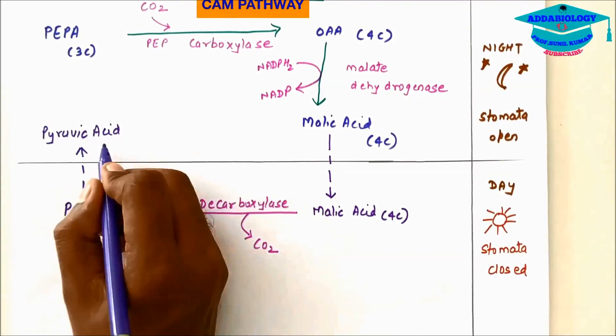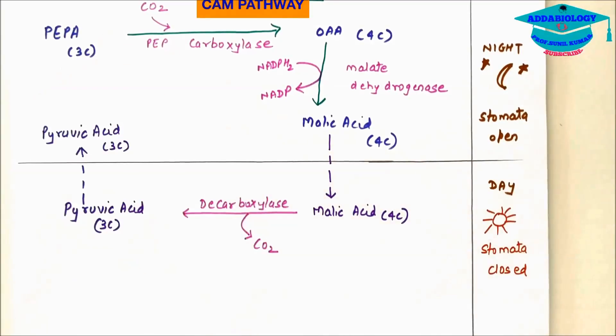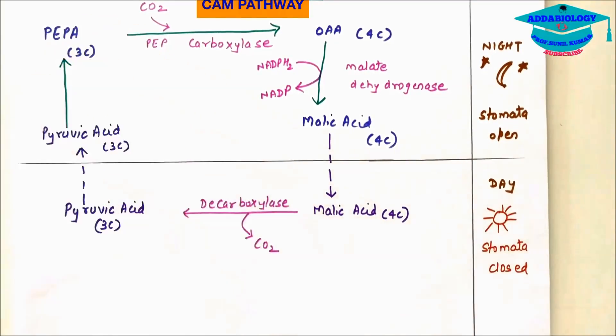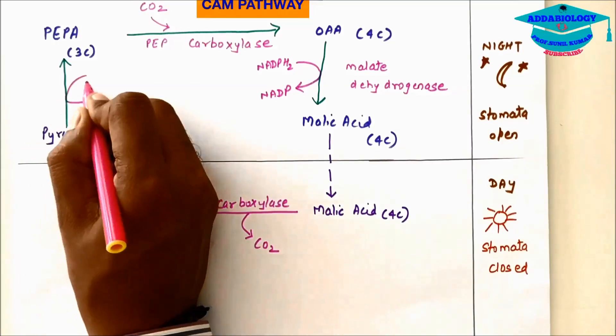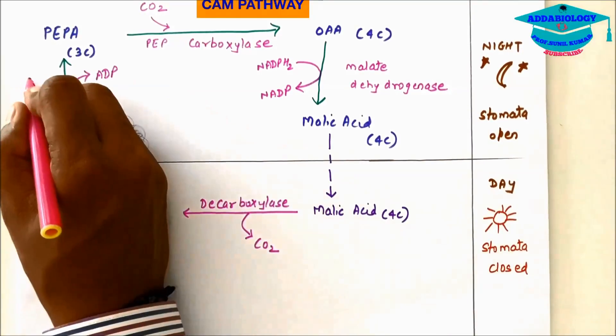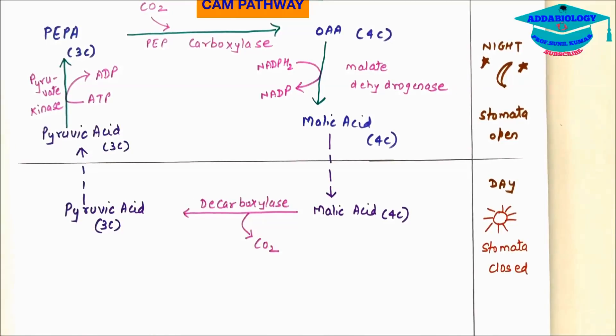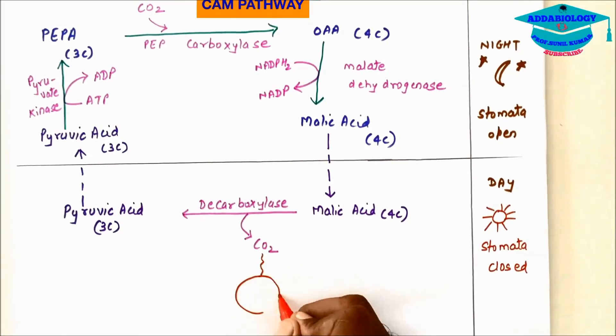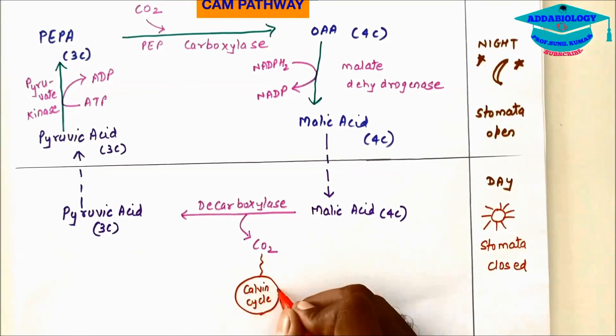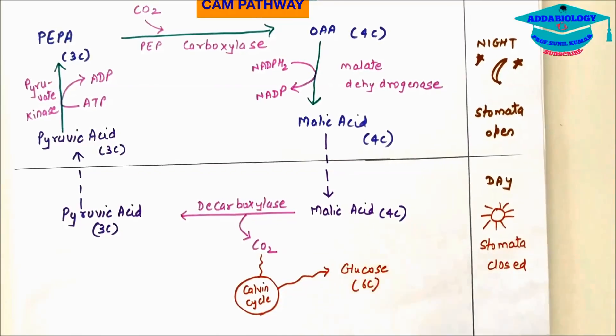This pyruvic acid throughout the day remains as it is and during night time pyruvic acid undergoes phosphorylation and forms PEPA in presence of enzyme pyruvate kinase. The carbon dioxide that is lost enters in the Calvin cycle which is used for making glucose.